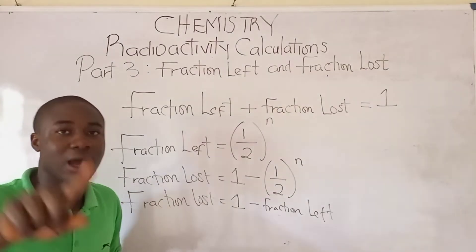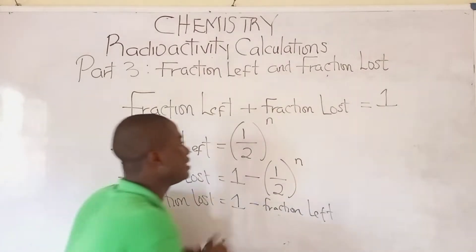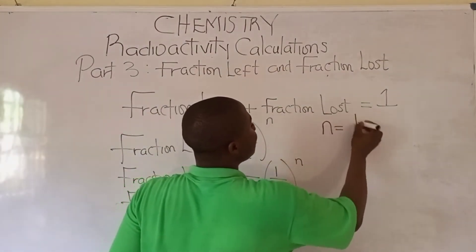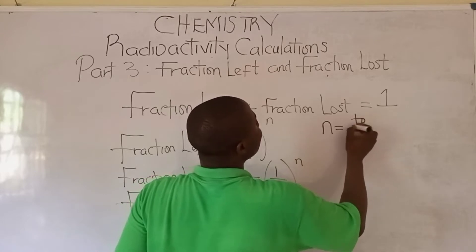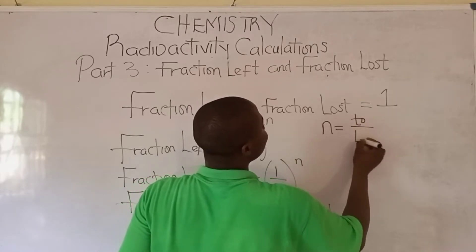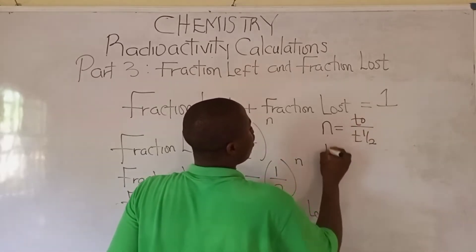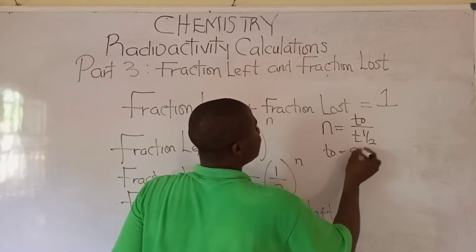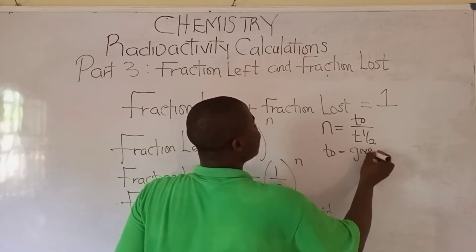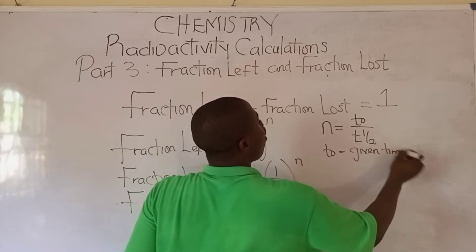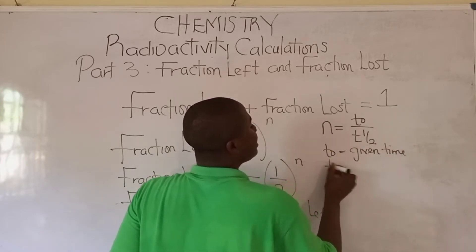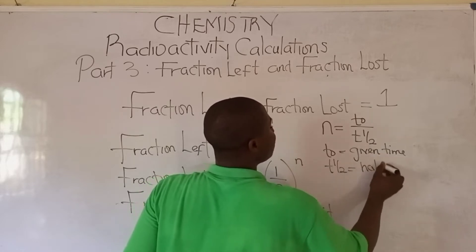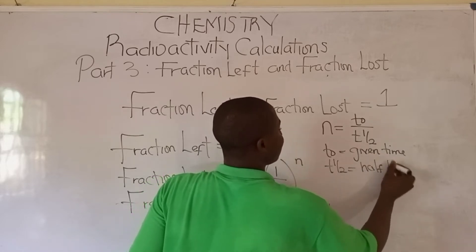The question you ask yourself now: what is n? N is basically t₀ over t½. What is t₀? T₀ is the giving time. What is t½, which is t-half? This is simply half-life.